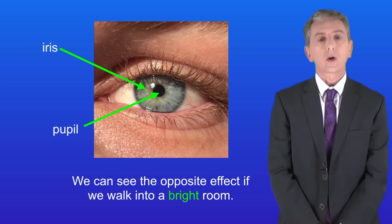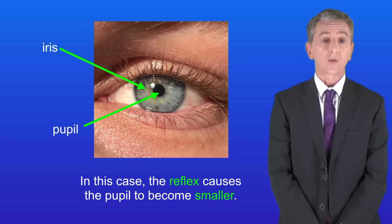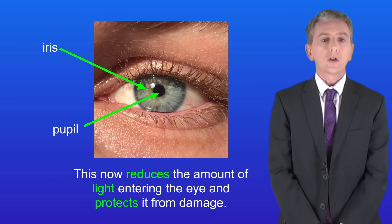We can see the opposite effect if we walk into a bright room. In this case the reflex causes the pupil to become smaller. This now reduces the amount of light entering the eye and protects it from damage.